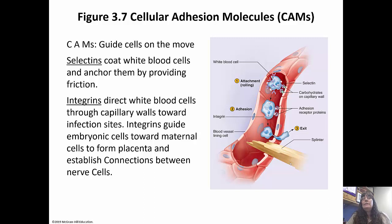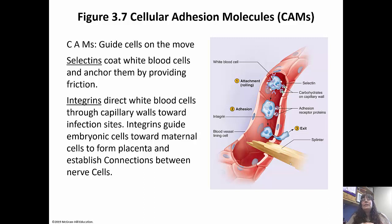CAMs, or cellular adhesion molecules, guide cells on how to move. Selectins coat white blood cells and anchor them by providing friction, while integrins direct the right blood cells through capillary walls to get to wherever an infection is happening. CAMs also guide embryonic cells toward maternal cells to form the placenta and establish connections between nerve cells. So cellular adhesion molecules direct, guide, connect, and attach — all very important, especially for early embryonic development.